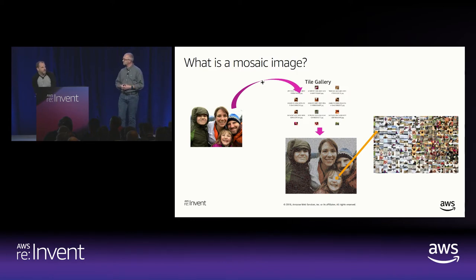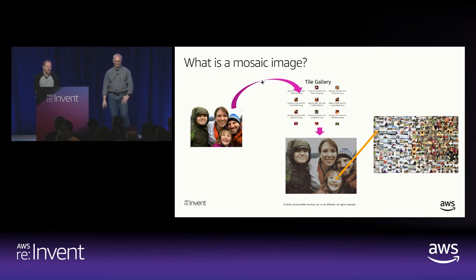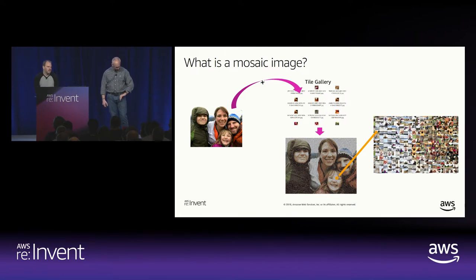Let's talk about mosaics. Steve and I generally do things around pictures at re:Invent. I'm a father of two kids, and I have hundreds of thousands of family pictures. This year we thought we'd go cloud scale with them — we make mosaics. A mosaic takes an original image and recreates it made up of hundreds and thousands of smaller pictures. The first image on the left is the source image, and it gets recreated into the middle image; if you zoom in, you can see all the individual images it's made up of.